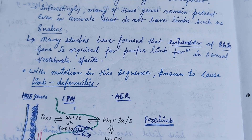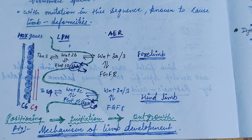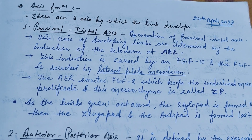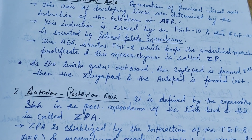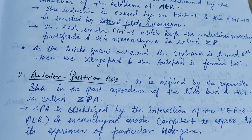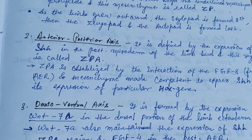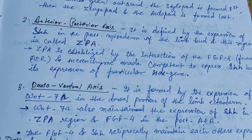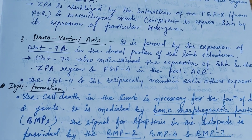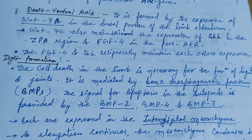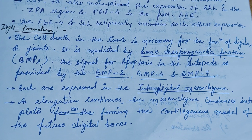Many studies have shown that the enhancer of the Shh gene is required for proper limb formation in soluble vertebrate species, with mutations in the sequence known to cause limb deformities. There are three axes of limb development. First, the proximal-distal axis: the AER secretes FGF8, which keeps the underlying mesenchyme proliferating — this mesenchyme is called the zone of proliferation (ZP). Second, the anterior-posterior axis: defined by Shh expression in the posterior mesoderm of the limb bud, the region called the ZPA. Third, the dorsal-ventral axis: formed by expression of Wnt7a in the dorsal limb ectoderm, while FGF4 and Shh reciprocally maintain each other's expression.